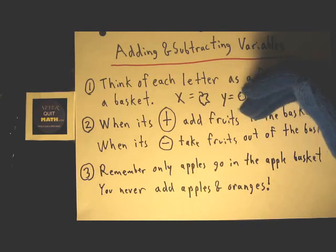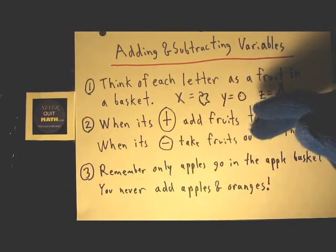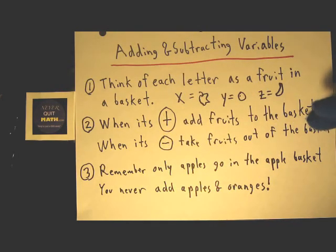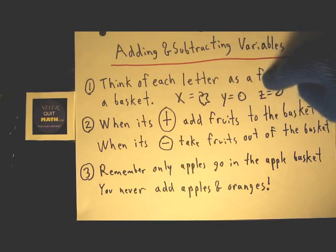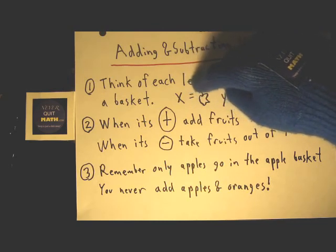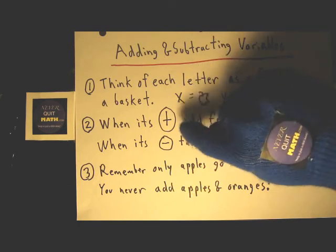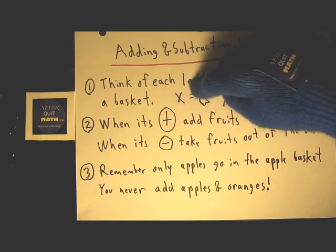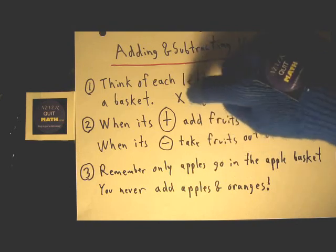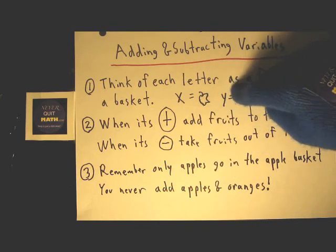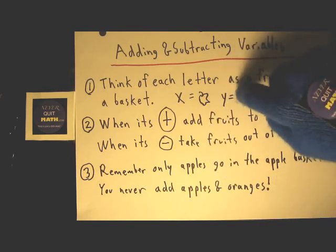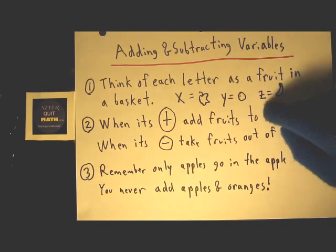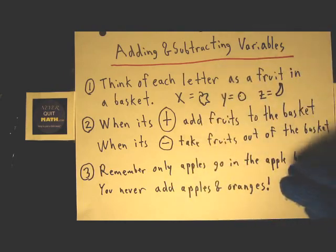When it's subtraction, you take fruits out of that basket. You'll have an apple basket, an orange basket, and a banana basket. Everything with an X deals with whether you add or subtract apples from the apple basket. Everything with a Y deals with adding or subtracting oranges from the orange basket.